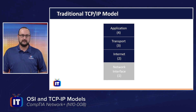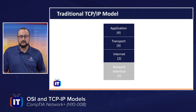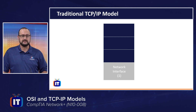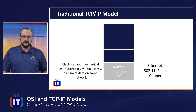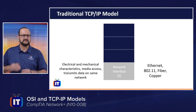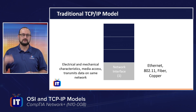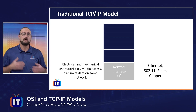Ready for a little confusion? The last layer is layer one — but again, pay attention to context on the Network+ exam as to which model is being referenced. The network interface layer defines things like electrical characteristics, the media access method, and how information is transmitted across the wire. You can see some squishing here of what we'd see in the OSI model — all that functionality is built into this lower layer. Examples include Ethernet, the IEEE 802 standard, wireless communications, and fiber versus copper.